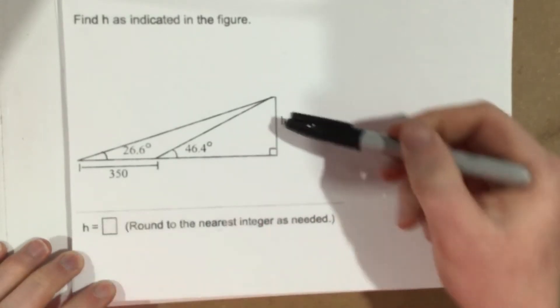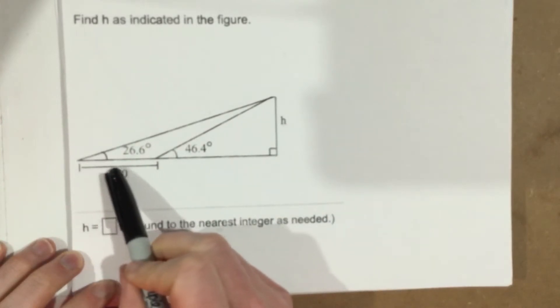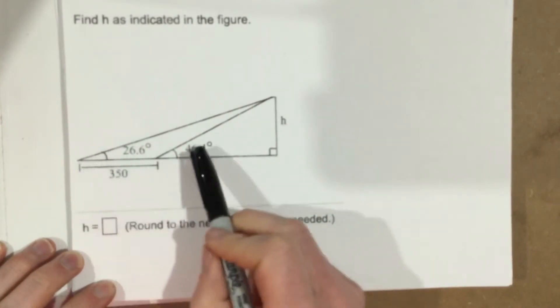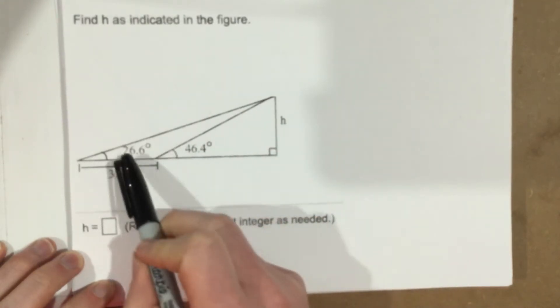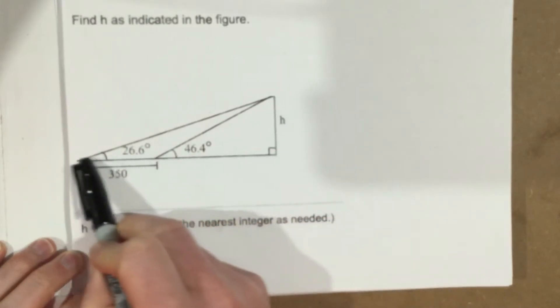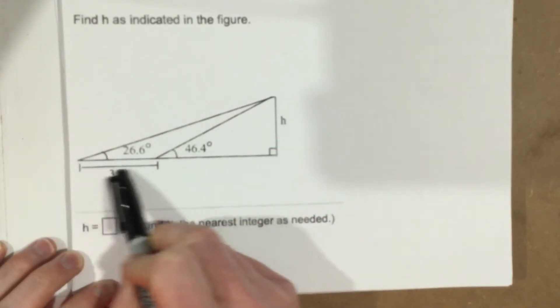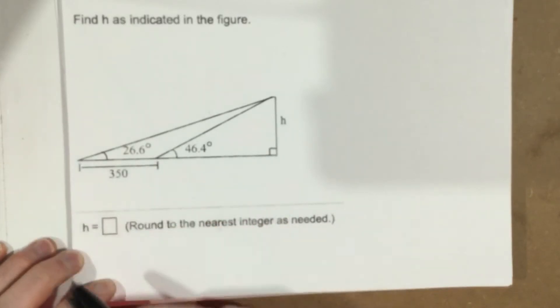They want us to find h, which is this height here. But they only give us some information for the angle on this right triangle and they give us the angle of the large right triangle. And then they give us this little piece of information, this 350 that goes from right here to right here. So anytime you get a problem like this in section 6.2, this is talking about right triangle trig, you want to use the right triangles to help you solve the problem.